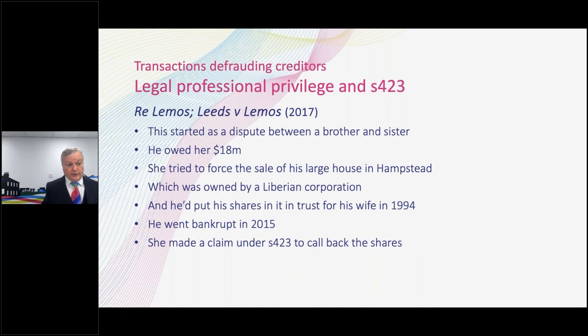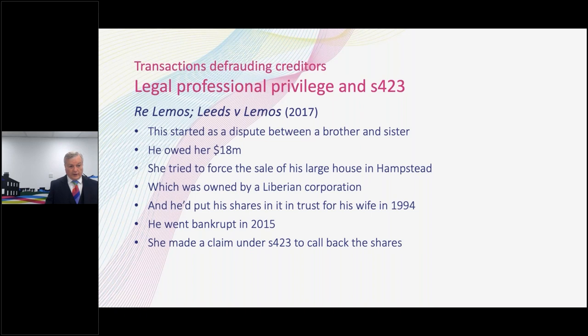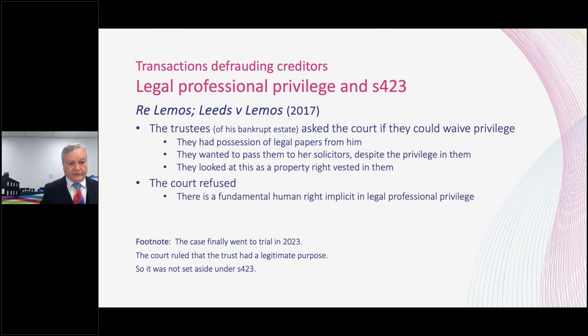Let's look at the Lemos case, which is much more recent — 2017. This started as a dispute between a brother and sister: he owed her about 18 million dollars. She got judgment against him and tried to recover her money by forcing the sale of a large house in Hampstead that he owned. That house was owned by a Liberian corporation. He had been a significant shareholder in it, but in 1994 had put his shares in trust for his wife. He went bankrupt in 2015 — more than 20 years after the trust was set up — and his sister brought a claim under Section 423 in 2016 to try to unravel that trust and bring the shares back into his estate.